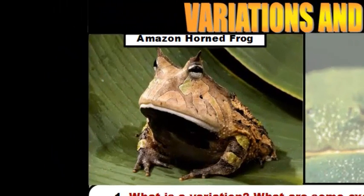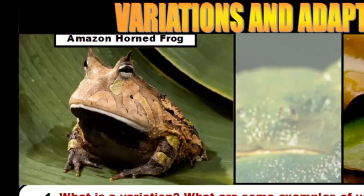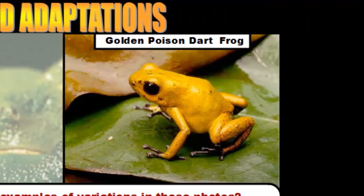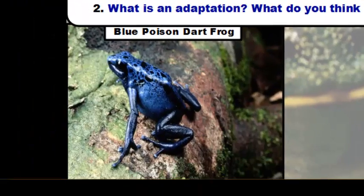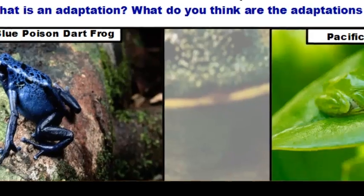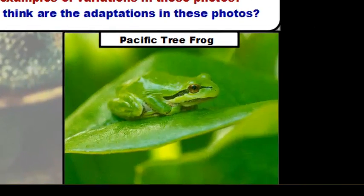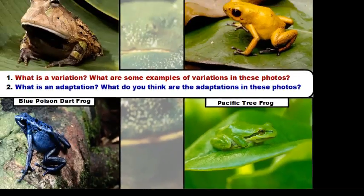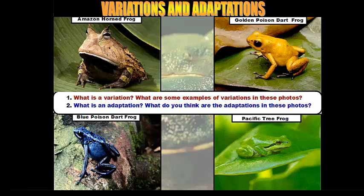The Amazon horned frog has browns, dark browns, tans, and some light greens, whereas the golden poison dart frog is bright yellow, the blue dart frog is bright blue, and the Pacific tree frog is bright green. So amongst these different species, you have different color variations.